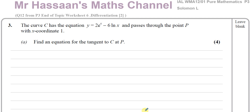The curve C has the equation y equals 2e to the power of x minus 6 ln(x), and passes through the point P with x-coordinate 1. We need to find an equation for the tangent to C at P.